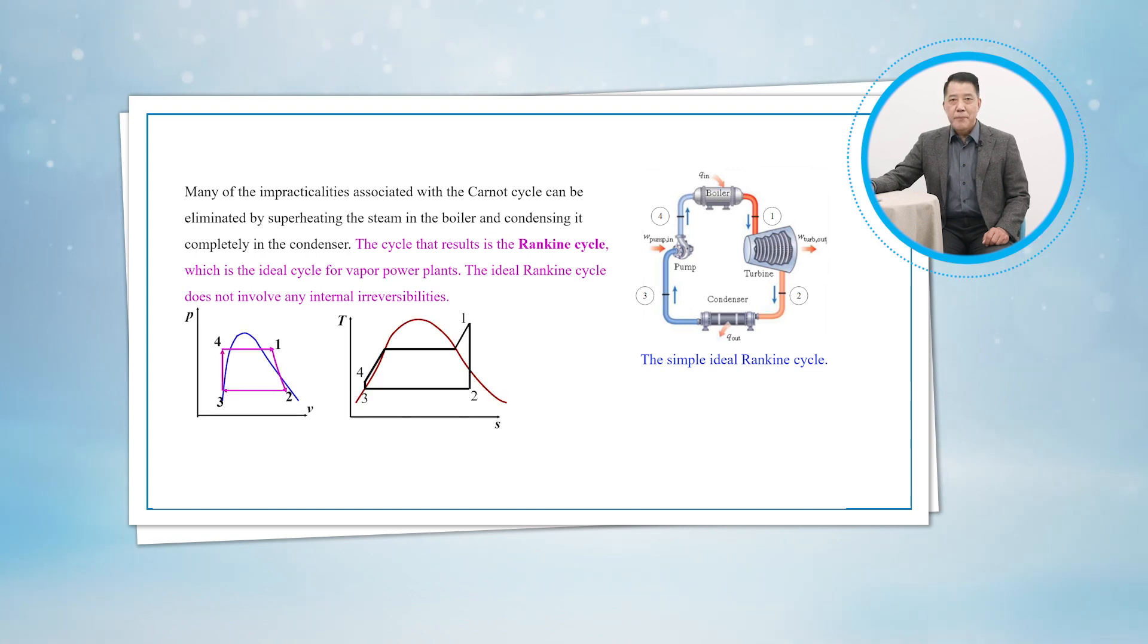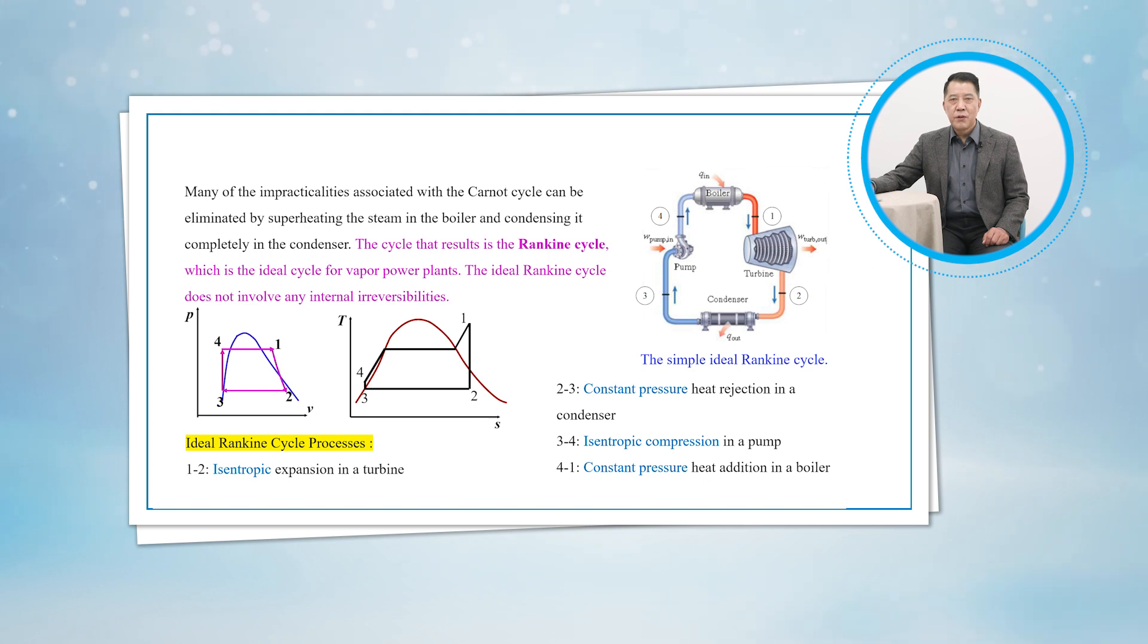The PV and T-S diagrams for an ideal Rankine cycle are shown here. The ideal Rankine cycle does not involve any internal irreversibilities. The ideal Rankine cycle consists of the following four processes.